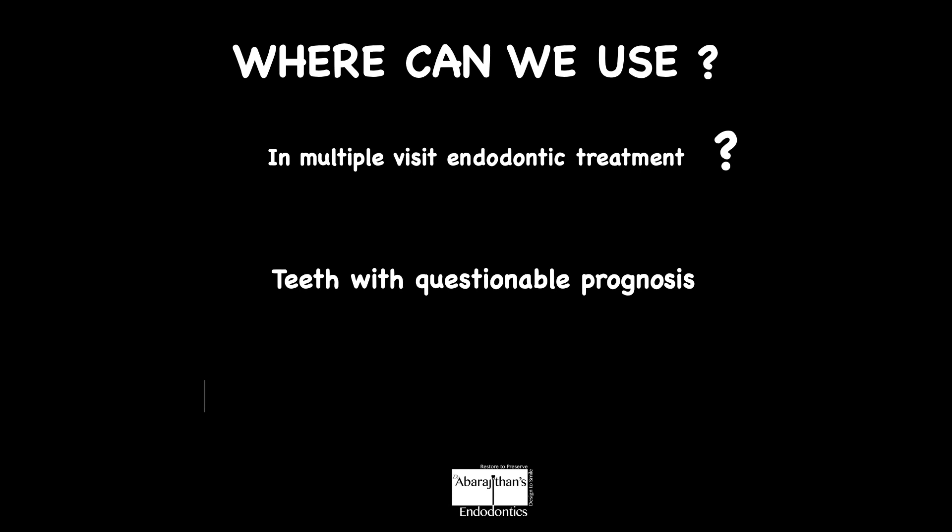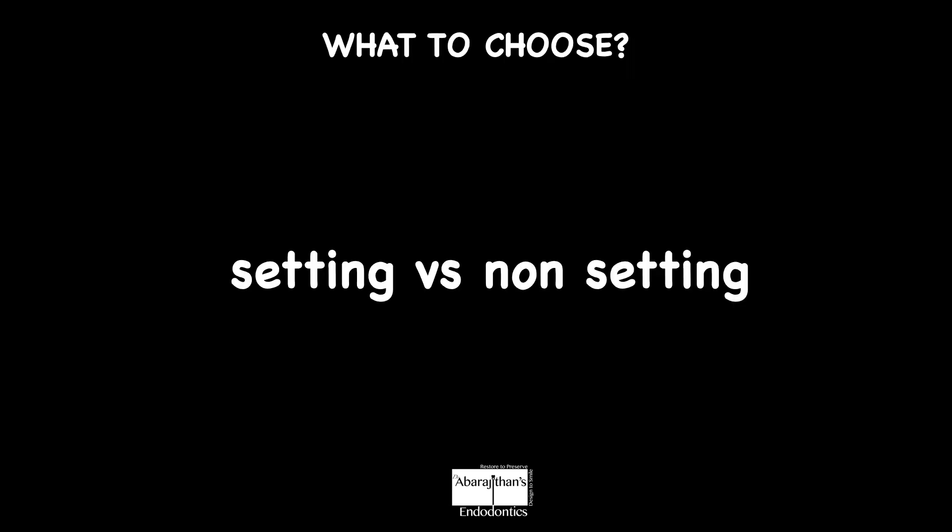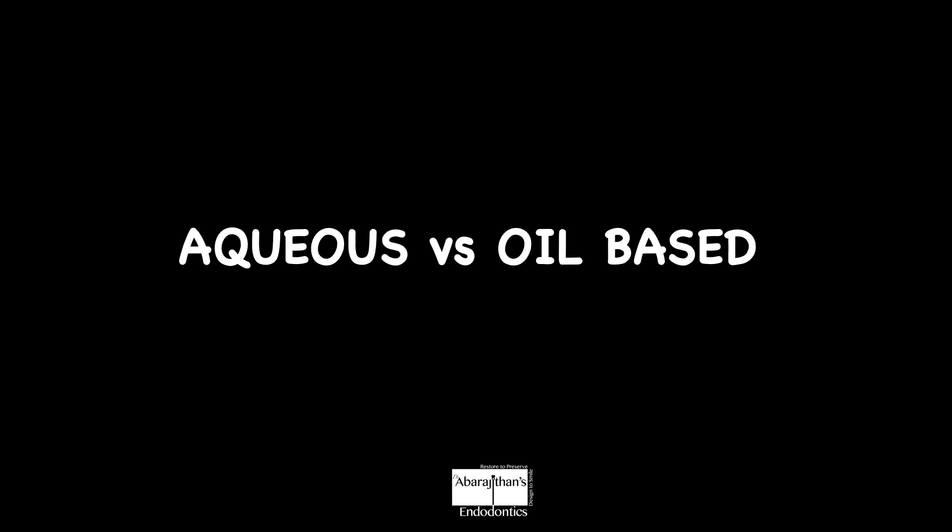Calcium hydroxide can be used as an interim dressing during the observation period. There are broadly two types: setting and non-setting. Setting calcium hydroxide is used for pulp capping as a sub-base, whereas for intra-canal medication you need a non-setting calcium hydroxide. Non-setting calcium hydroxide can be further classified into aqueous and oil-based — these are the two most commonly available commercial types.